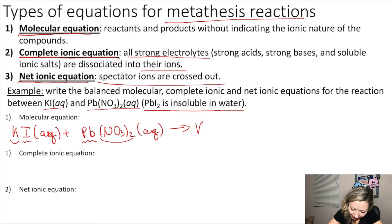The first product is KNO3 potassium nitrate. This is soluble in water, so this is aqueous, plus the other product is lead iodide PbI2, which is insoluble in water. So this is going to be our solid.